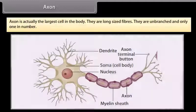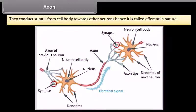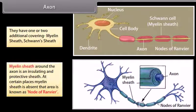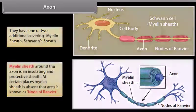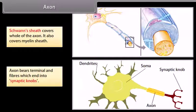The axon is the largest cell fiber in the body. Axons are long-sized fibers, unbranched and only one in number. They conduct stimuli from the cell body towards other neurons, hence they are called efferent in nature. They have one or two additional coverings: the myelin sheath, which is an insulating and protective sheath around the axon, and the Schwann sheath, which covers the whole axon including the myelin sheath. At certain places, the myelin sheath is absent and that area is known as the node of Ranvier. The axon bears terminal end fibers which end into synaptic knobs.